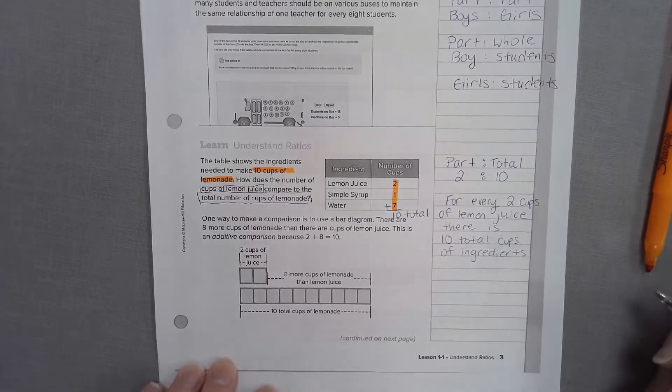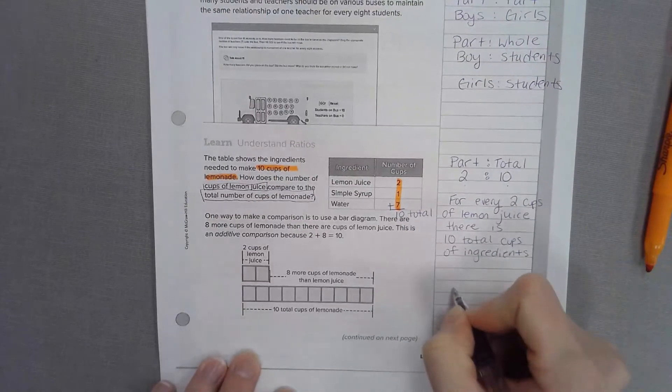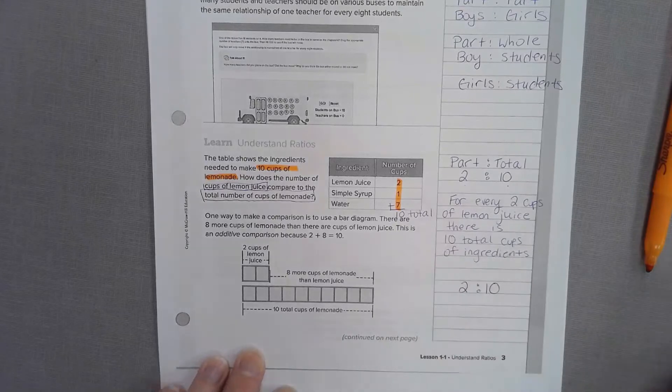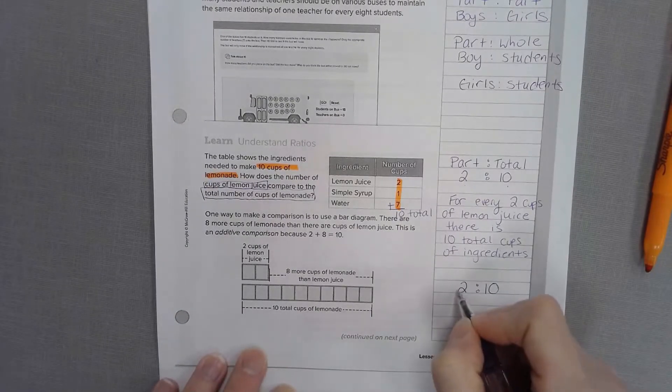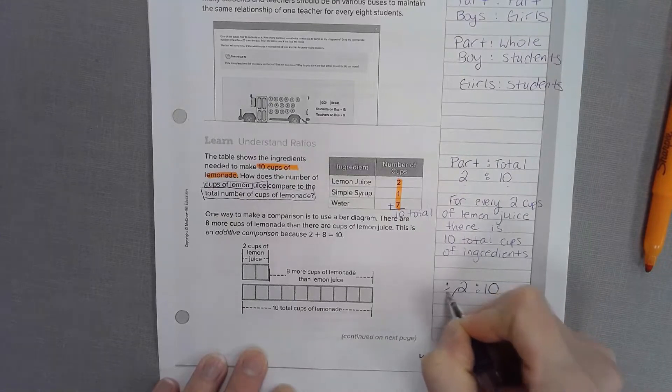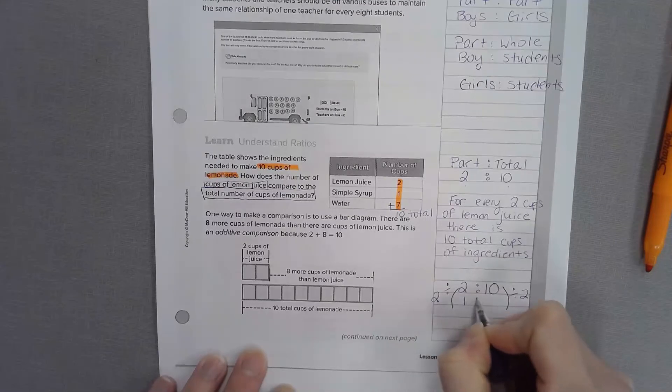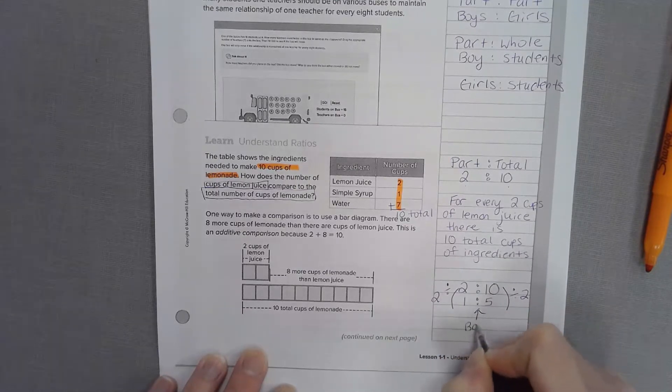There's another way that we can look at this, we can take these two numbers and simplify. So let's write our 2 to 10. We have to think what goes into both 2 and 10 to make it smaller. They're both even so we could divide by 2. And that would be a 1 to 5 ratio. And that would be our base ratio.